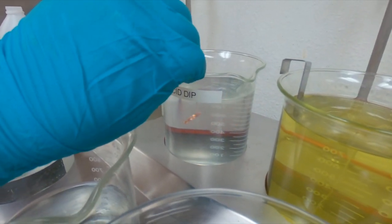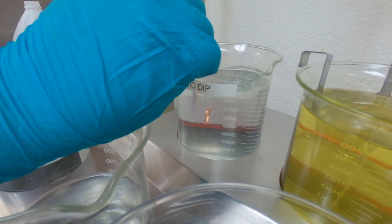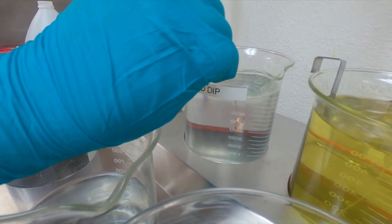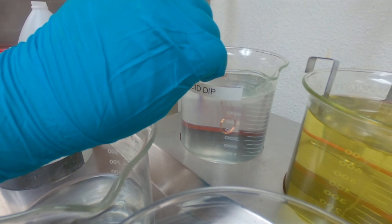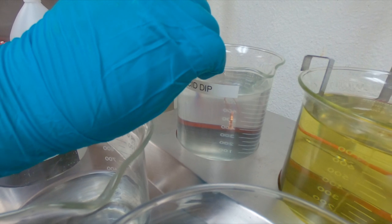This is a precaution step to make sure that we neutralize any of the gold plating solution that could still be left on the surface. And we're going to acid dip neutralize for 30 seconds, just going to gently agitate it. Make sure it gets in all the nooks and crannies.